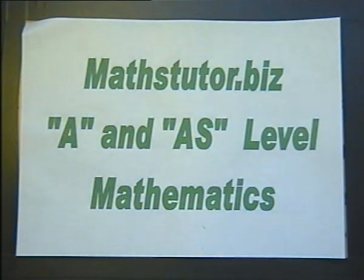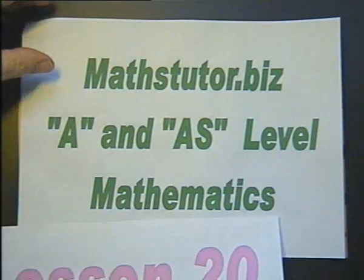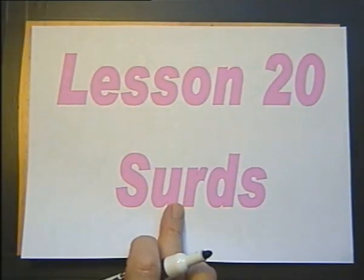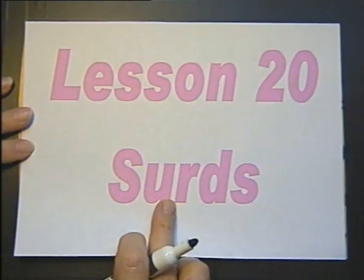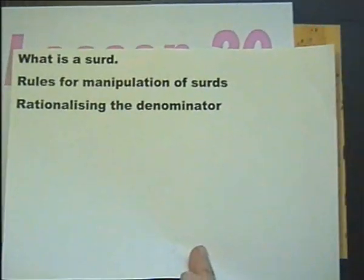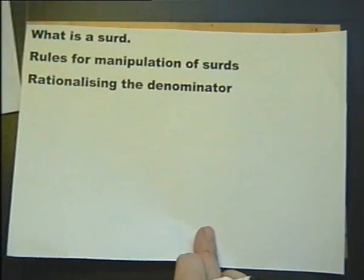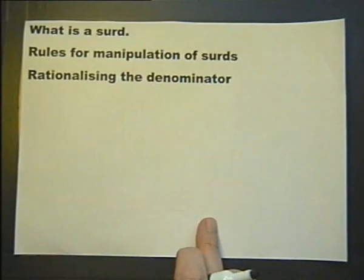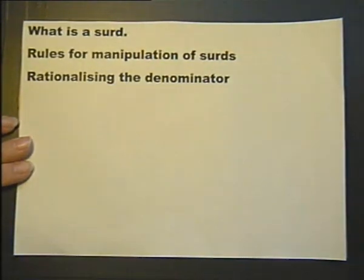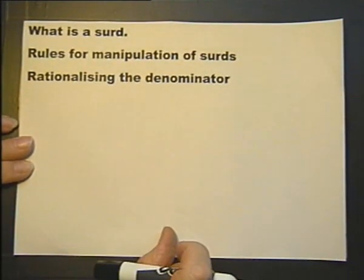A and AS level mathematics, Lesson 20. We're going to be looking at surds — what is a surd, and rules for manipulation of surds, including rationalising the denominator.